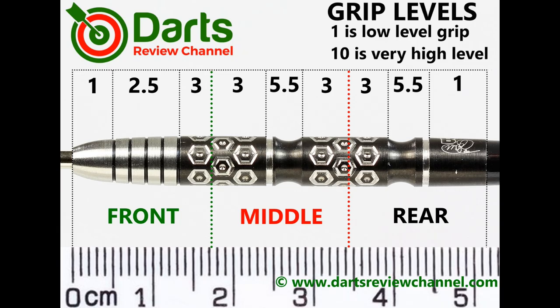Most of the dart is really quite a low level grip. The hexagon grip pattern, it's just not deep enough to be grippy as I would like so it's really only the scallops that are grippy so 5.5 at most.